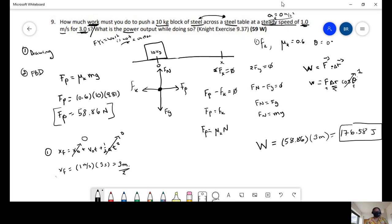Now it's asking us to find the power. Power is defined as work over time. So we have 3 seconds. So this is 176.58 over 3 seconds equals 58.86 watts per second. And this becomes 59 watts of power.